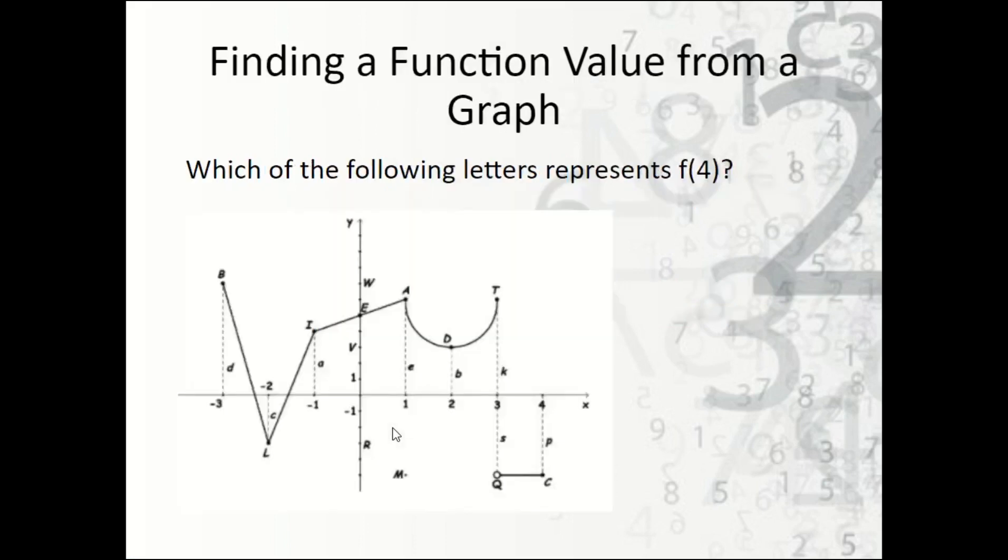So finding a function value from a graph. Which of the following letters represents f of 4? I'm going to go here to where x is 4, which is here. So notice I have f of 4 is represented by this dotted line p here. So it's right there. And we would say then that p represents f of 4. Now, if it asks for the actual solution, then that would be c. So p is our answer in this one.